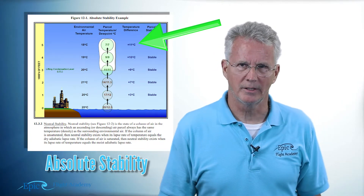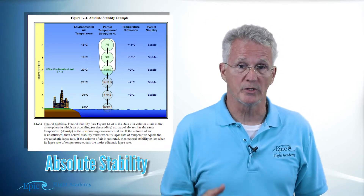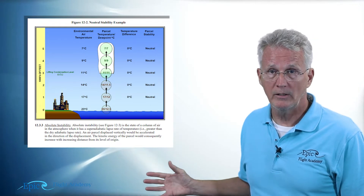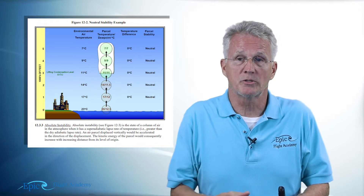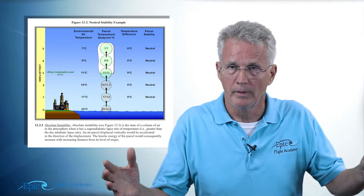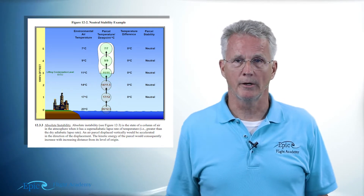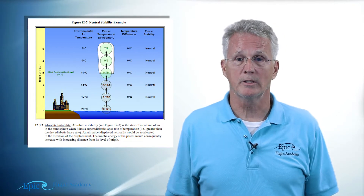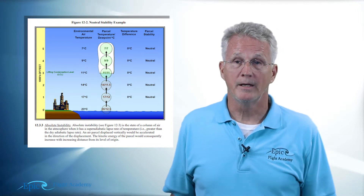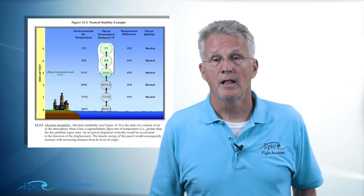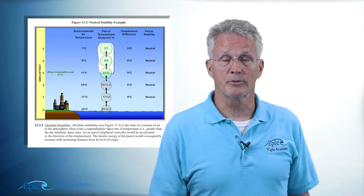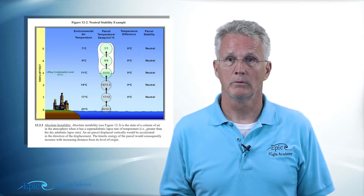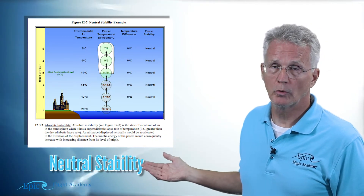Now take a look at our next diagram — figure 12-2. We have that same parcel of air at sea level: 20 degrees temperature, 12.5 degrees dew point. It cools as it rises, expanding and cooling adiabatically — no heat exchange between that parcel and the surrounding air. Look at the surrounding air temperatures in the left-hand column; those temperatures are getting cooler as well. In our third column, taking the difference between the environmental air temperature and the parcel temperature, the difference is zero. This shows us what we call neutral stability.